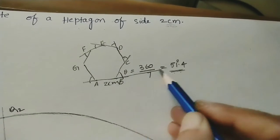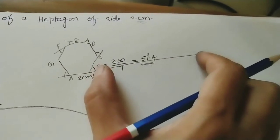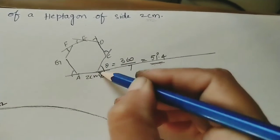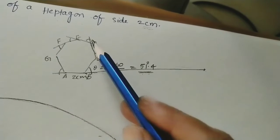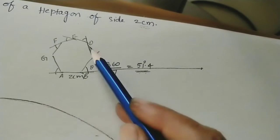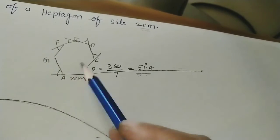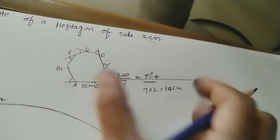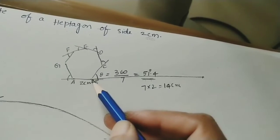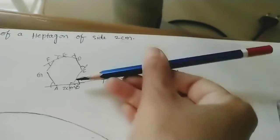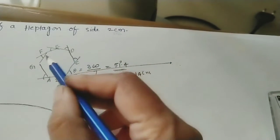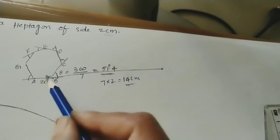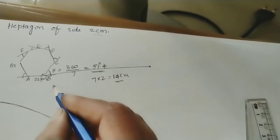After completing the polygon, extend a horizontal line from vertex B for the involute construction. B is the initial point. The thread length equals the circumference of the polygon. Each side is two centimeters, and there are seven sides, so the circumference is 7 × 2 = 14 centimeters. We must draw a 14-centimeter horizontal line representing the thread.